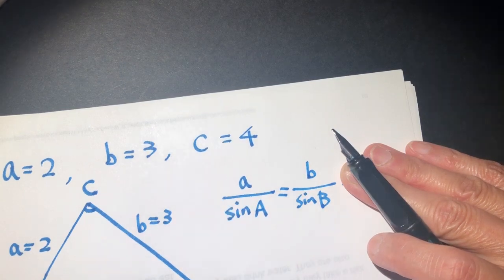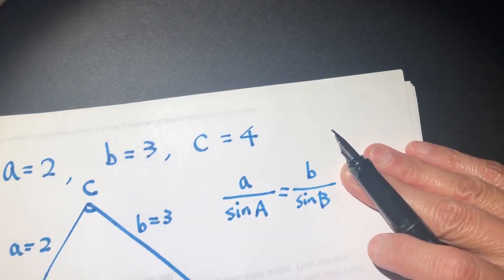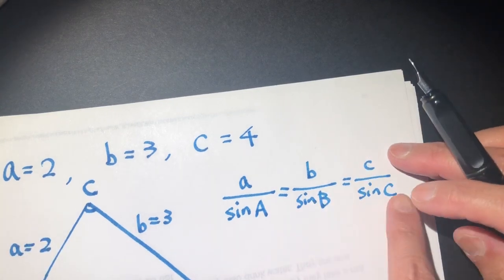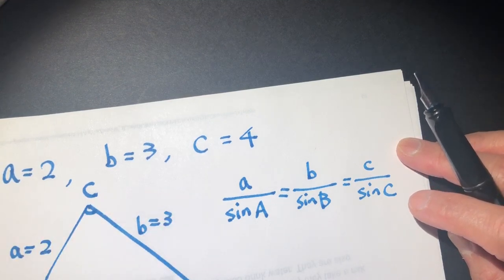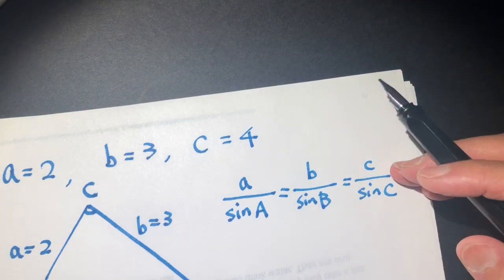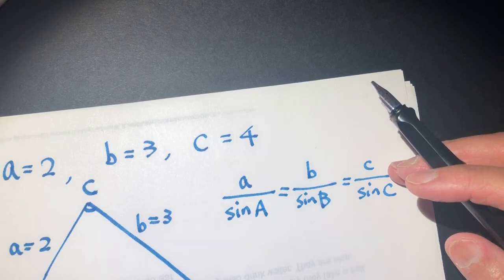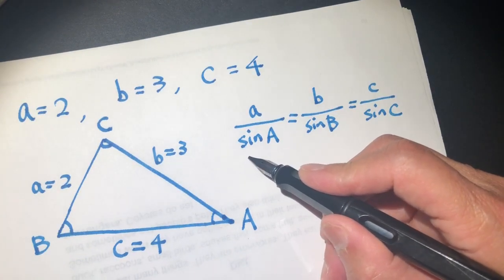Let's see — we know A, we know B, but sine A is unknown and sine B is unknown. For C, it's the same thing. The three sides are just arbitrarily placed. So we do not have enough known conditions to solve this problem using the law of sine.